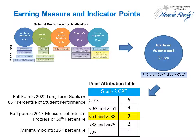For each measure, full points can be earned by either achieving the state's long-term goals or by achieving at or above the 85th percentile of statewide student achievement on this measure. Half points are earned by meeting the state's 2017 interim progress goals or by achieving at the 50th percentile of statewide student performance. Lastly, schools performing at or below the 15th percentile of statewide student performance would earn the minimum points possible for the measure.